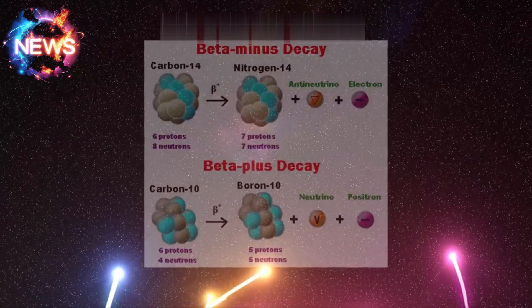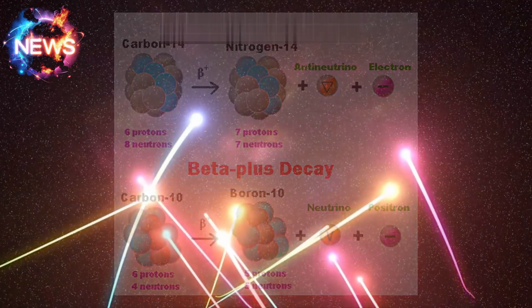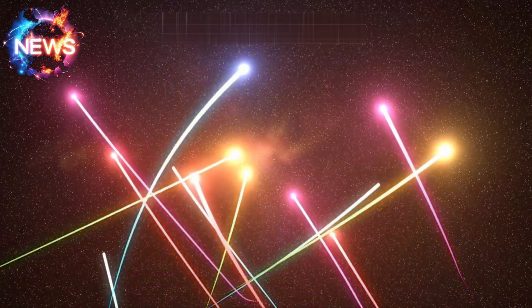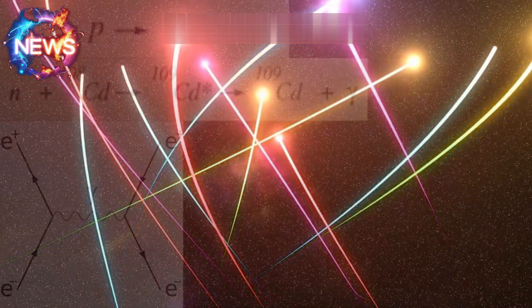Reines and Cowan's Experiment: In 1956, Clyde Cowan and Frederick Reines confirmed the existence of the neutrino through an experiment detecting anti-neutrinos produced in a nuclear reactor.